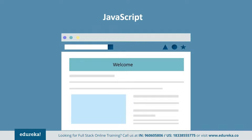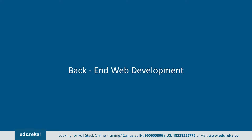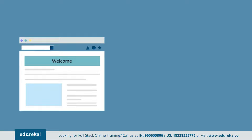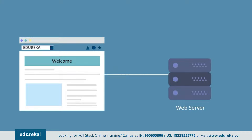Now let's look at the back end. When a user opens a web page and clicks a link, submits a form, or enters a URL, the browser connects to a web server — just a computer running software that delivers resources to web pages. When a web server receives a request, back-end developers program it to respond with the right resources. The web server is connected to a database which is continuously polled on receiving requests.